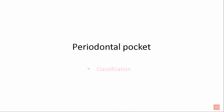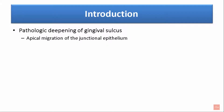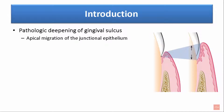Welcome back to MediClass. Periodontal pocket classification and content. A periodontal pocket is a pathologic deepening of the gingival sulcus which occurs due to the apical migration of the junctional epithelium.